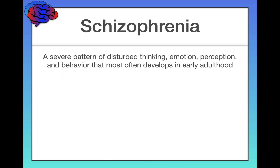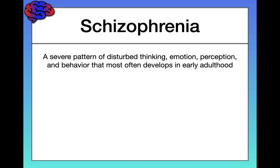So let's begin with a general conversation about schizophrenia. The literal translation of the word is a splitting of the mind, taken from the Greek words schizo, meaning splitting, and frene, meaning psyche or mind. But this is a bit of a misnomer, because schizophrenia does not involve split personalities. We would call that dissociative identity disorder, which you've probably heard of as multiple personalities.